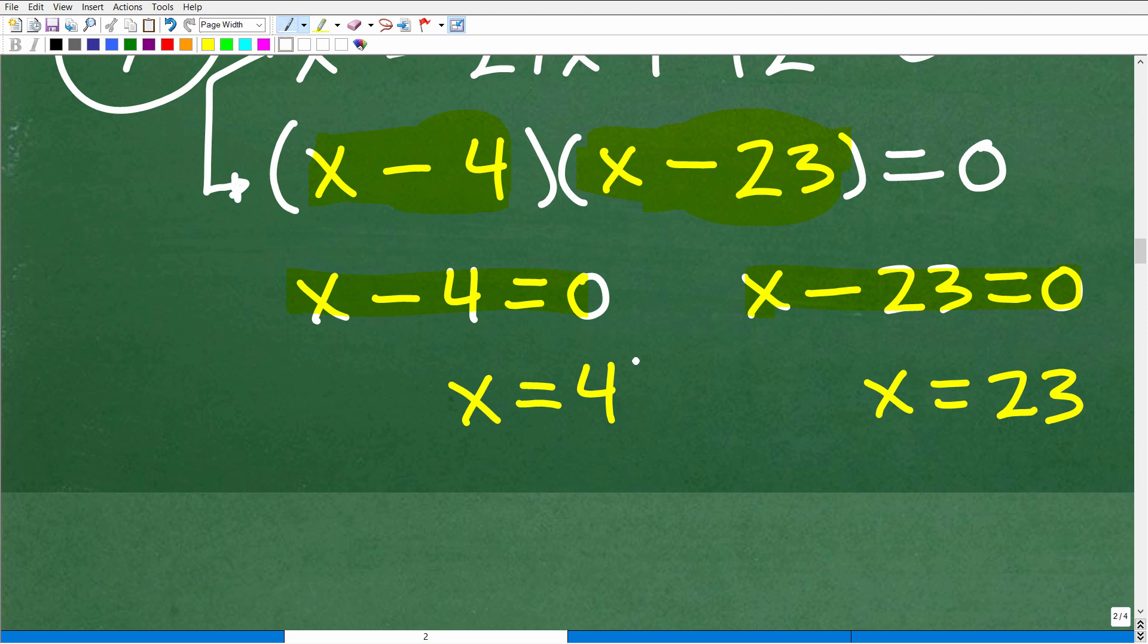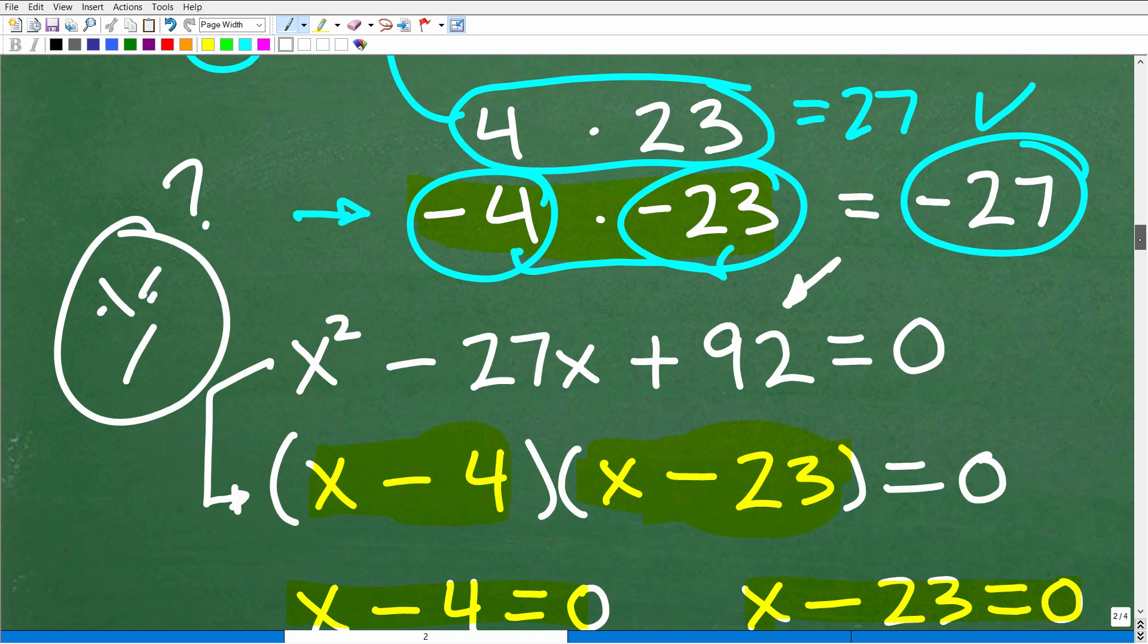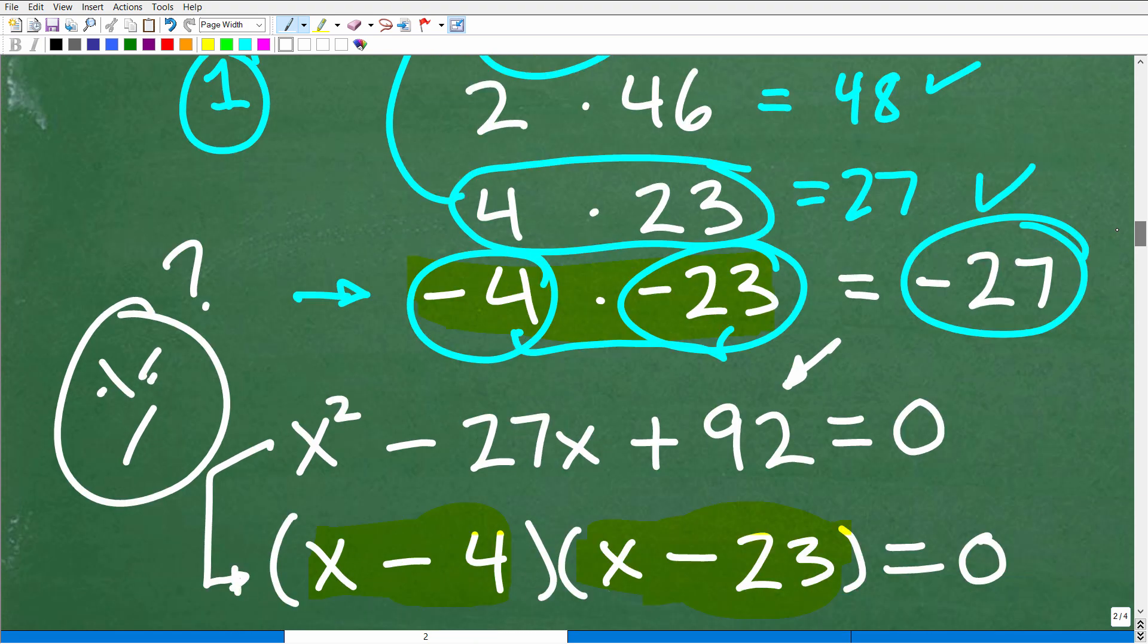meaning one or both of these factors is equal to zero. So the next step is we just set each of these, each of these factors equal to zero and solve. So X minus four is equal to zero. So X is equal to four X minus 23 is equal to zero. So X is equal to 23. And here are our two solutions. Again, we are talking about a quadratic equation, right? So there's always going to be two solutions.